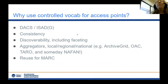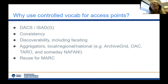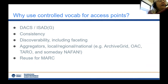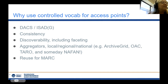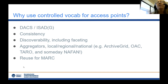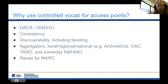So now we've talked about controlled vocabularies and access points. Why do we want to use controlled vocabulary for access points? There are several solid reasons. The first is that DACS — Describing Archives: A Content Standard — and ISAD(G), the international standard for archival description, both recommend it. They both say: if you're going to do archival description, please give people some access points. Using a controlled vocabulary means they will be consistent within your institution across your finding aids.